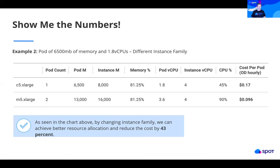In our second example, we're going to show 6,500 megabytes of memory with 1.8 vCPUs and show how different instance families themselves can show big differences in price. The difference between a C5 extra large and an M5 extra large for this particular pod as it scales — it's much more efficient to run this on an M5 extra large. You're going to see bigger gains in cost and more allocation per CPU.